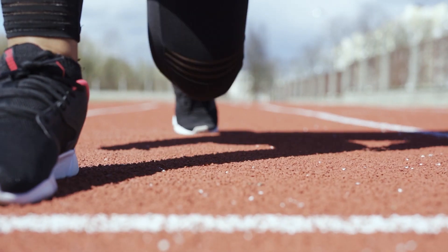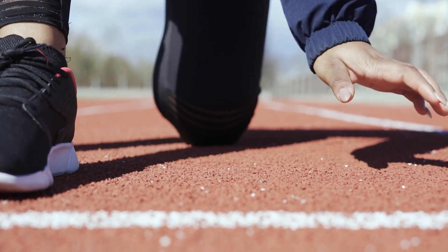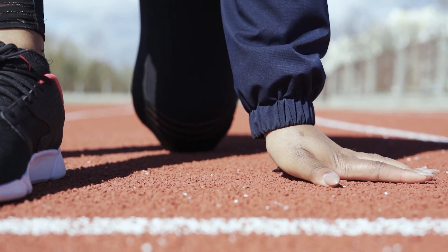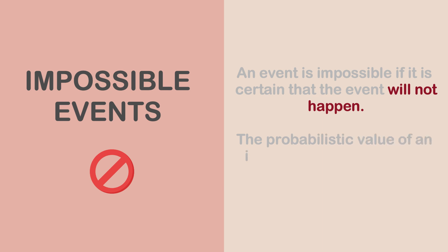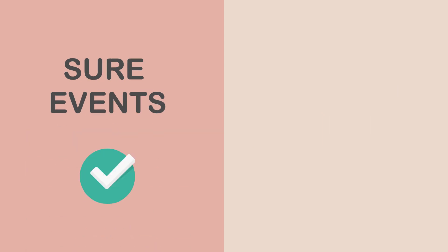Let's kick start this by trying to define what an impossible event is. An event is said to be impossible if there is a certainty that the event is not going to happen — it is impossible that this event is going to occur. For an impossible event, the probabilistic value attached to such an event is actually equal to zero.